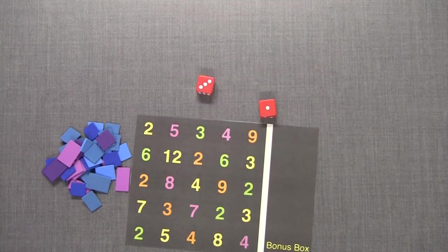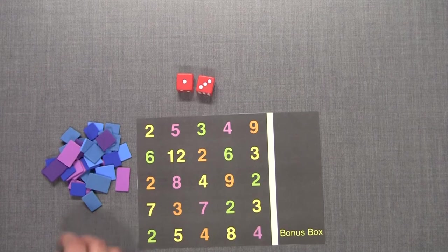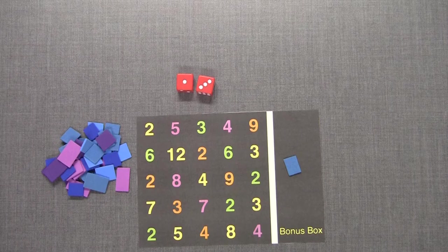If you roll a number with a prime factor that is not on the board, place one marker in the bonus box to the right of the game board. Once you cover one set of factors of your number your turn is over. Play continues to the left.